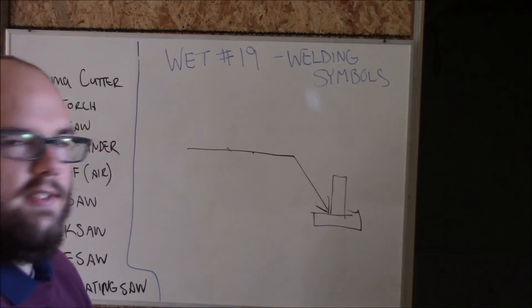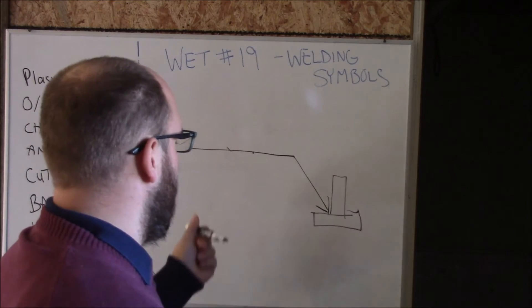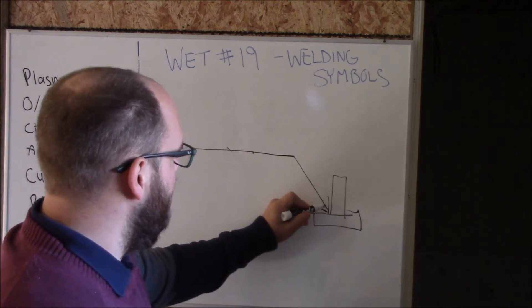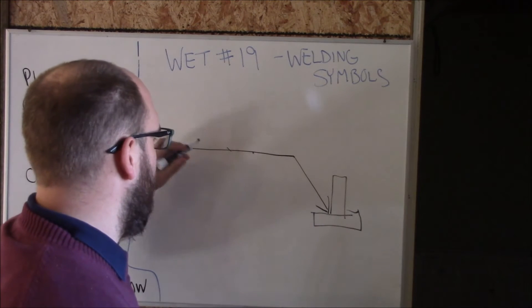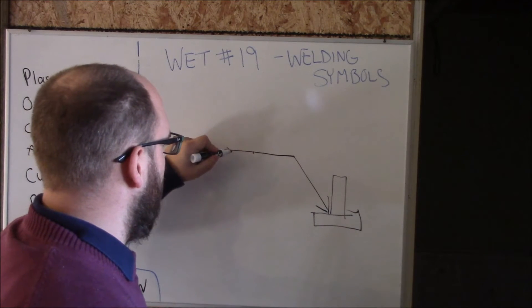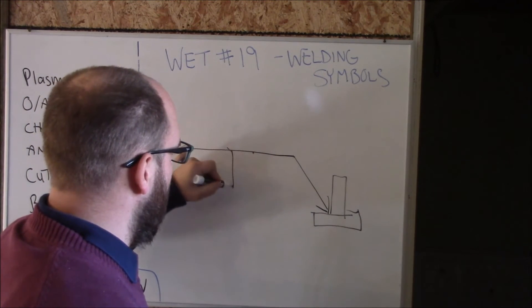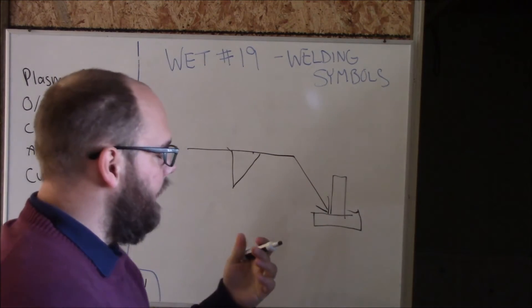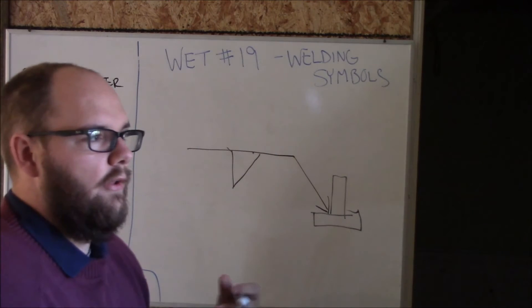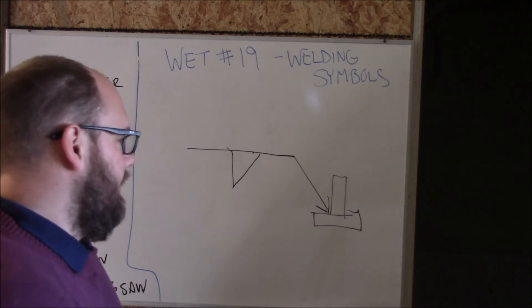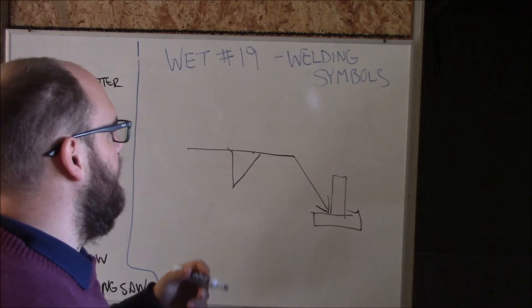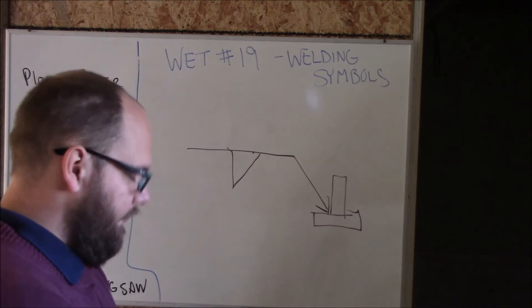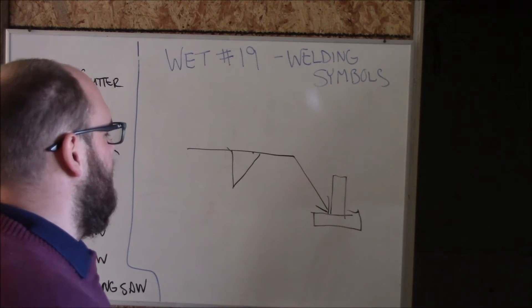So regardless of which side your arrow, your leader line comes in - I mean if your leader's this way or if it's up this way - your weld symbol, if it's got a vertical leg in it, it is always to the left side.